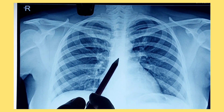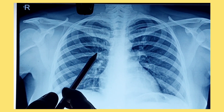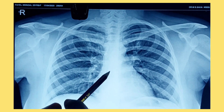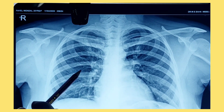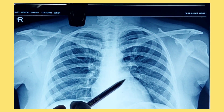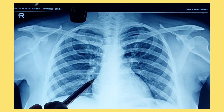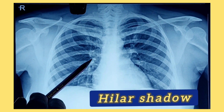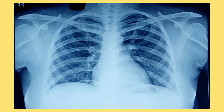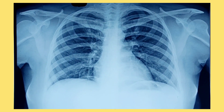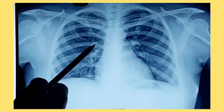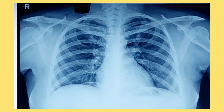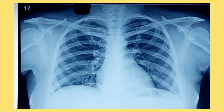Here in this area there are some radiopaque areas visible. Towards the medial side, towards the heart on both sides, that shadow is the hilar shadow. That shadow is due to the lymphatics, blood vessels, hilar lymph nodes, and possibly branches of the bronchial tree.